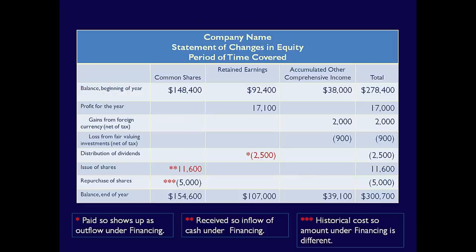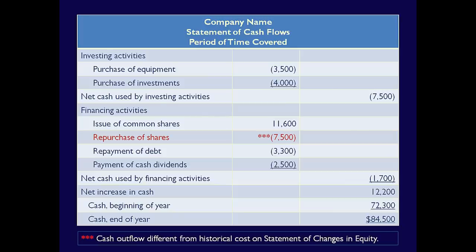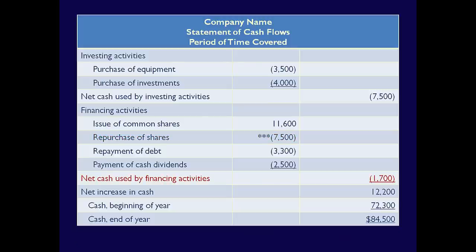Both the Statement of Cash Flows and the Statement of Changes in Equity show a dividend payment of $2,500, because this amount was paid in cash. In addition, both statements show an issue of shares of $11,600, because this amount was received in cash. Note that the repurchase of shares on the Statement of Changes in Equity is $5,000, but the outflow on the Statement of Cash Flows was $7,500. That's because the $5,000 is historical cost and the $7,500 on the Statement of Cash Flows was cash. Further discussions of why these two amounts are different will be covered in a future video. Looking at the total from financing activities, we can see there was a net outflow of $1,700.